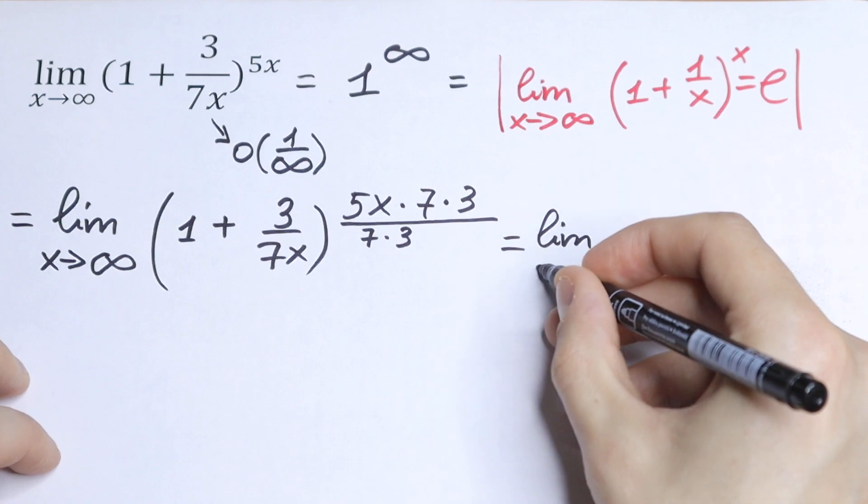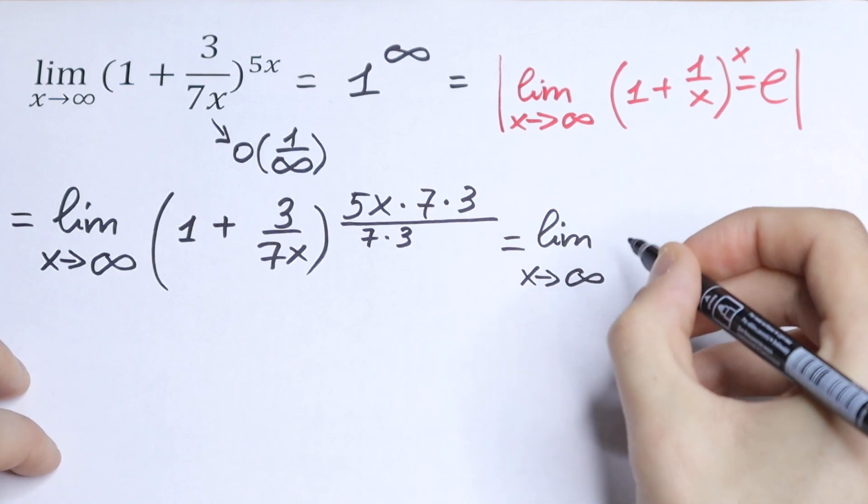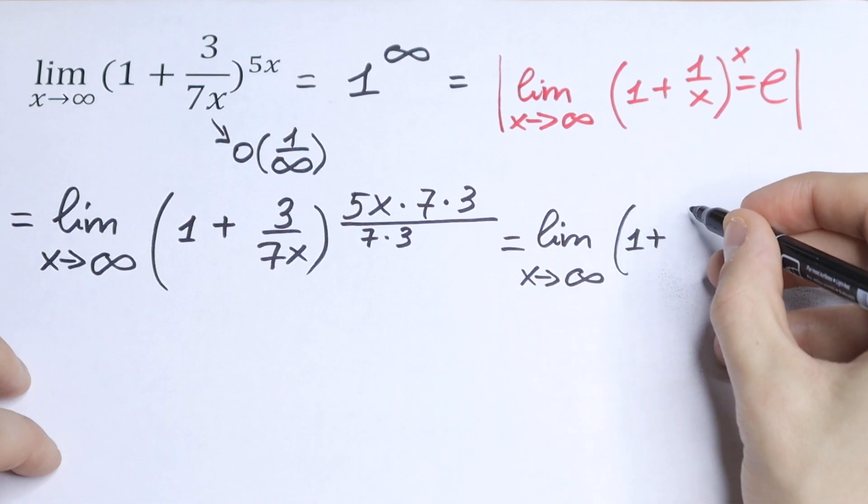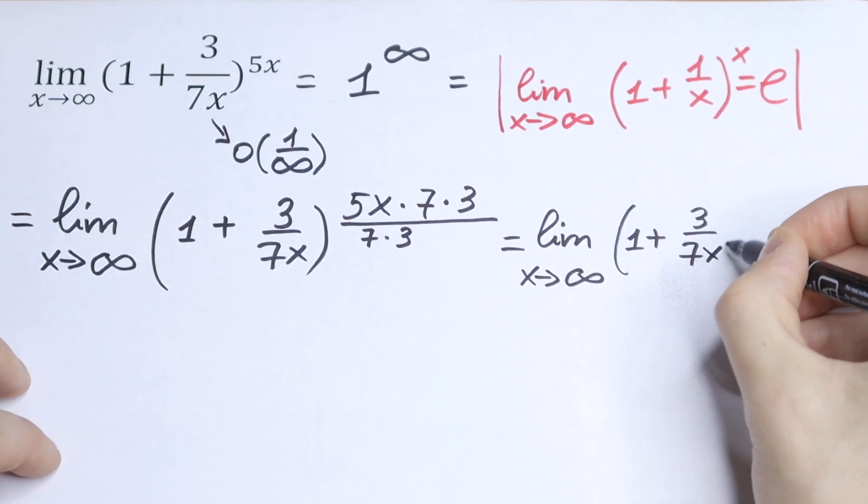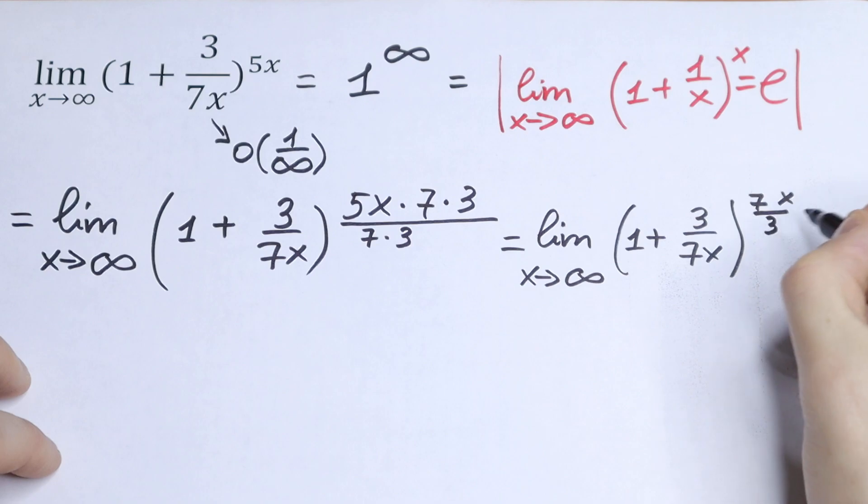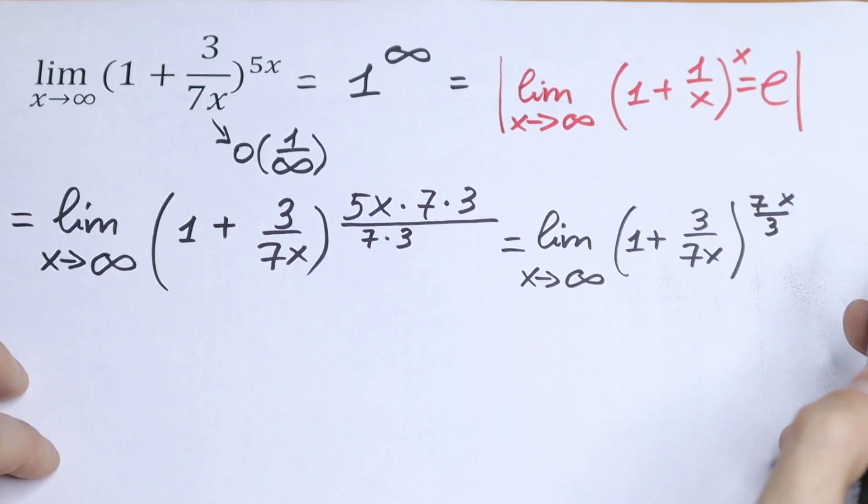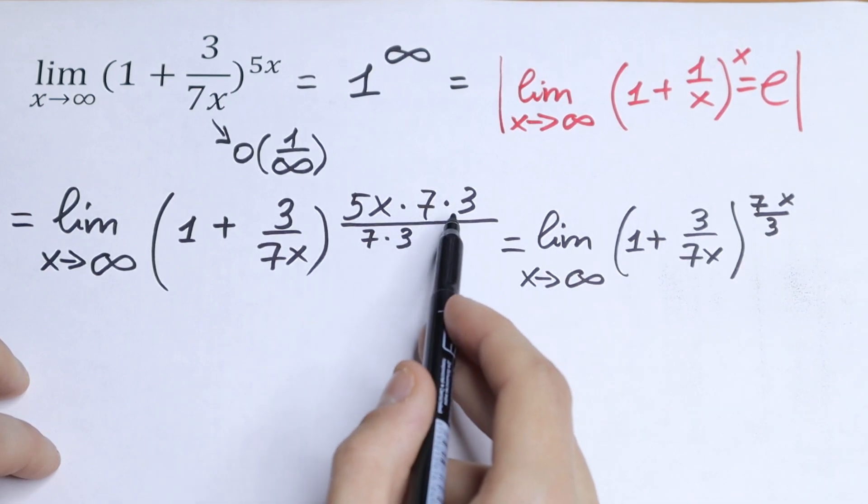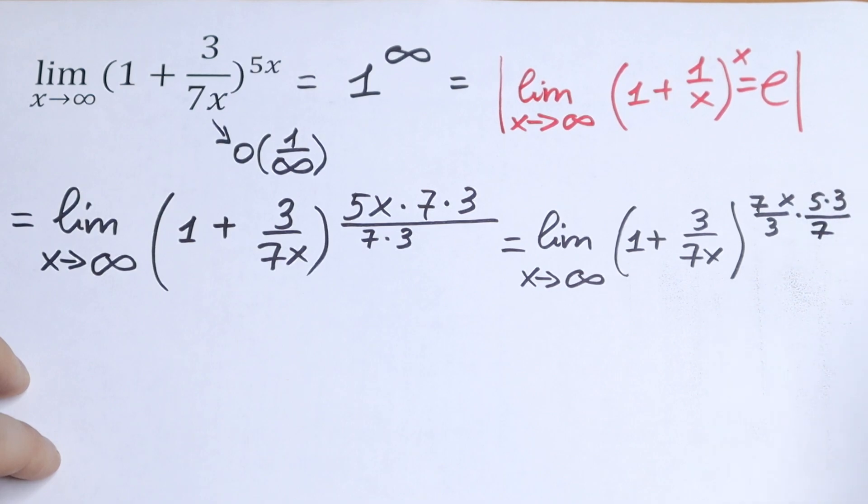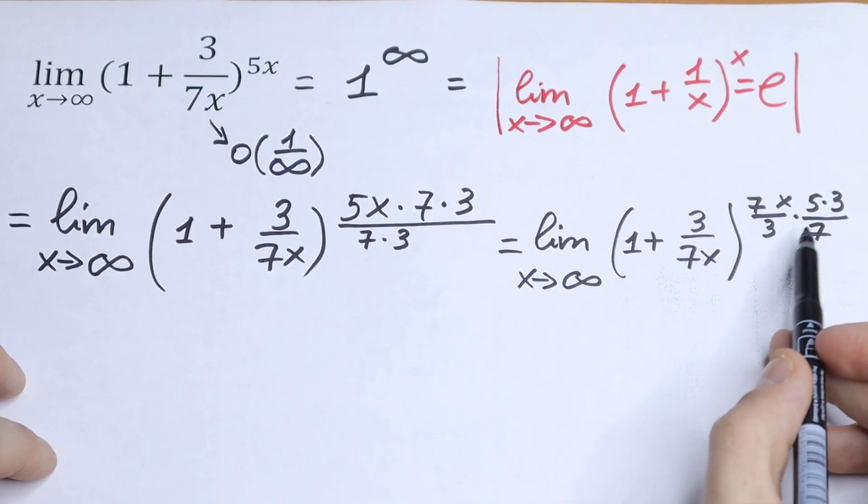we can write this limit as x approaches to infinity of the function 1 plus 3 over 7x all raised to the power 7x over 3, and multiplying by the thing that we left right here, 5 times 3 divided by 7. I just separated this. So take a look right now.